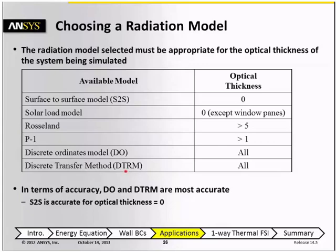In terms of accuracy, the discrete-ordinates model and DTRM are the most accurate. But for optical thickness equals zero, the S2S model can be equally as accurate as these models.